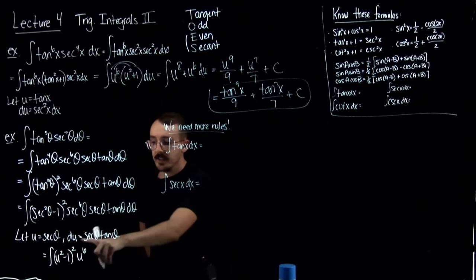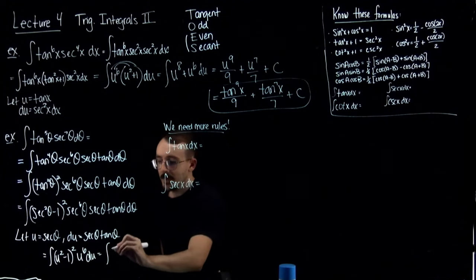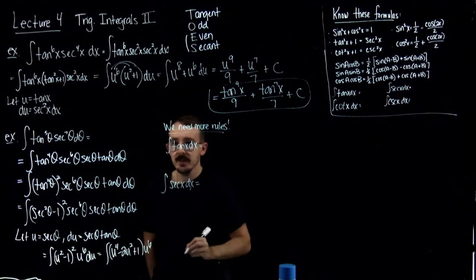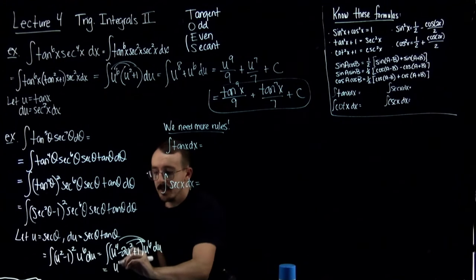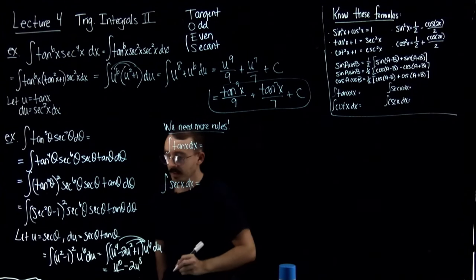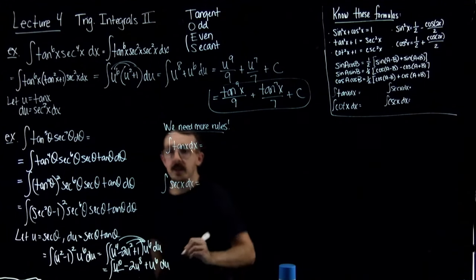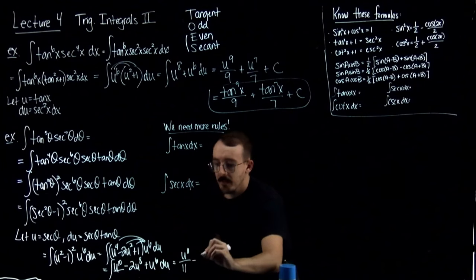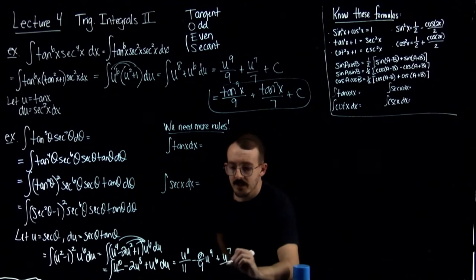Secant tangent dtheta gets replaced with du. FOILing gives u to the fourth minus 2u squared plus 1, times u to the sixth. Distributing, I get u to the tenth minus 2u to the eighth plus u to the sixth, du. Integrating: u to the eleventh over 11 minus 2 over 9 times u to the ninth plus u to the seventh over 7 plus C.